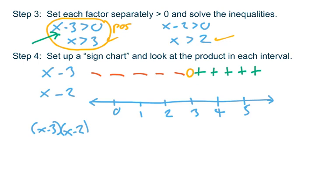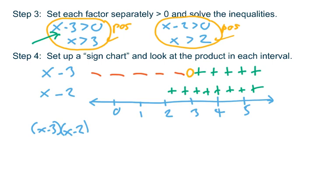Now do the same thing for x minus 2. We think about where x minus 2 is positive — it's positive whenever x is greater than 2. So next to x minus 2 but above the number line, put plus signs for all values of x greater than 2. And if x minus 2 is positive to the right of 2, it's automatically negative to the left of 2, so put little negative signs there. You don't have to solve both x minus 2 greater than zero and x minus 2 less than zero — you get one for free. Right at 2, the factor equals zero, so put a zero there.